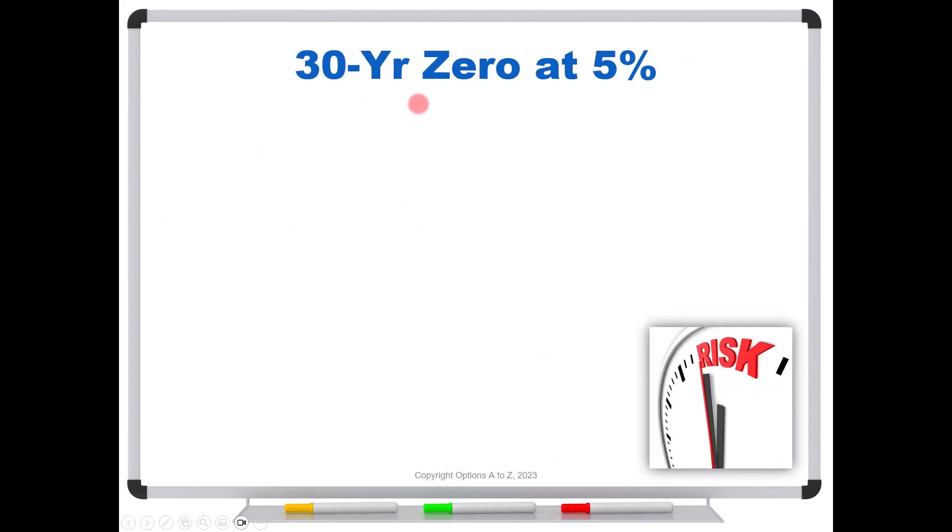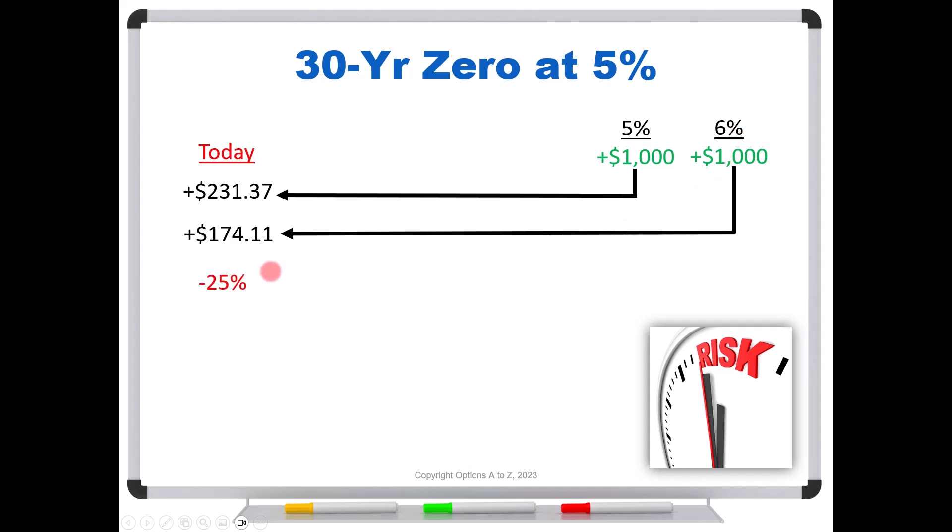For instance, let's look at a 30-year zero at 5%. We're going to take the $1,000 face. We'll look at another one at 6%, so they both mature to $1,000. What are these worth today? We take $1,000 divided by 1.05 raised to the 30th, and that comes up to be $231.37. However, if they instantly jump to 6%, what happens to that bond's price? We take $1,000 divided by 1.06 raised to the 30th, and that bond's price falls from $231 down to $174, a 25% hit.